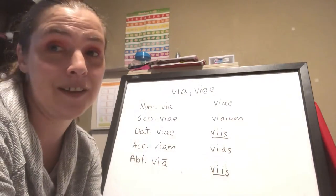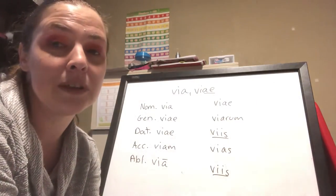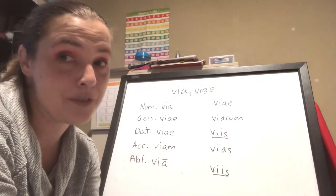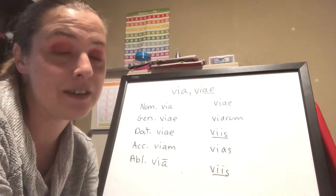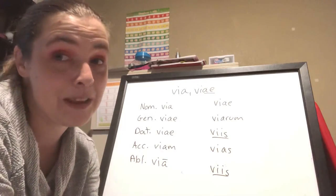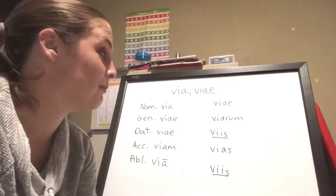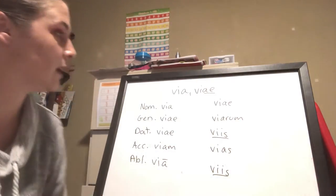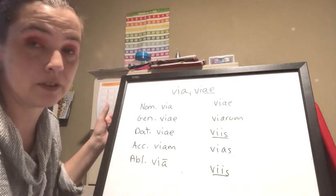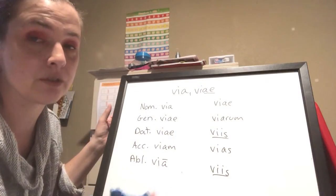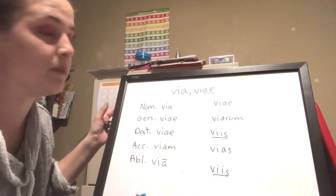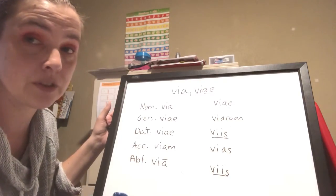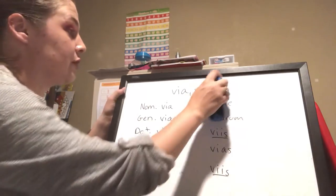It doesn't look like any English words that we would probably use or see, but it's right. If you found your stem correctly and you know the correct endings, it is what it is. You've got to get some of the English out of the way. This was your assignment from last time — via, meaning road, way, or path.